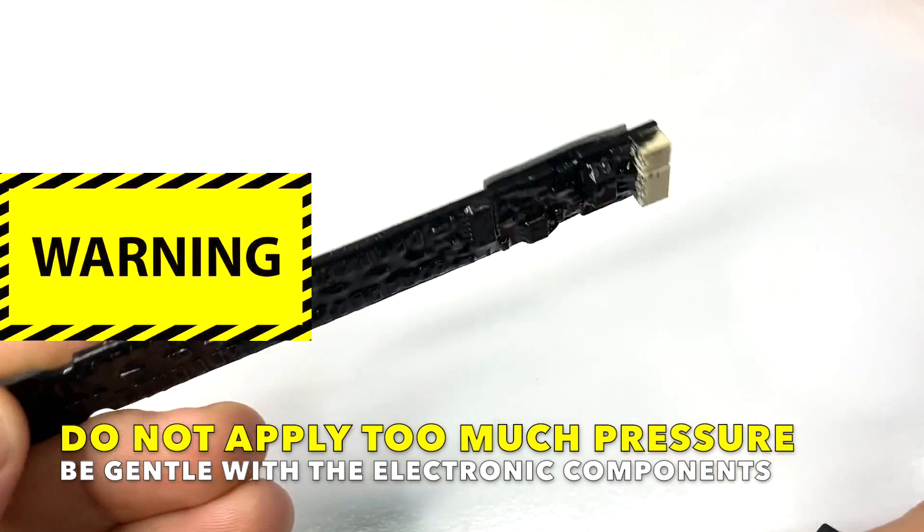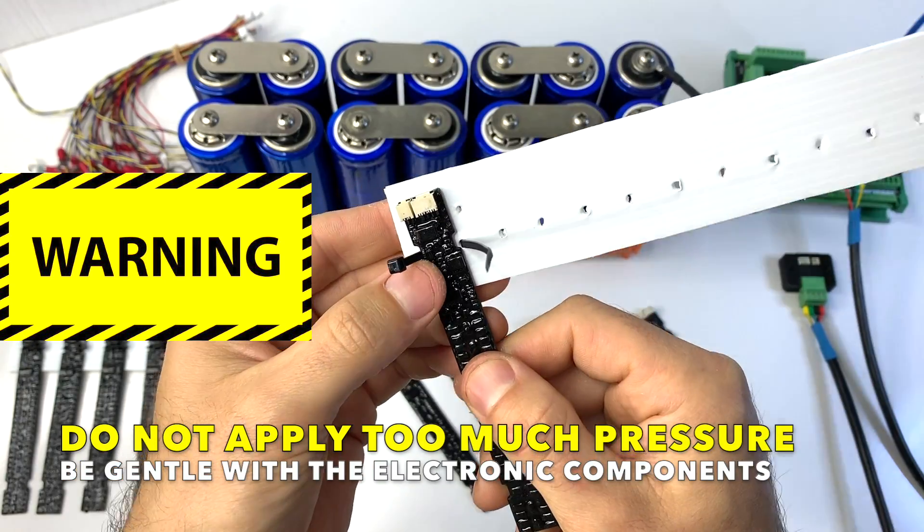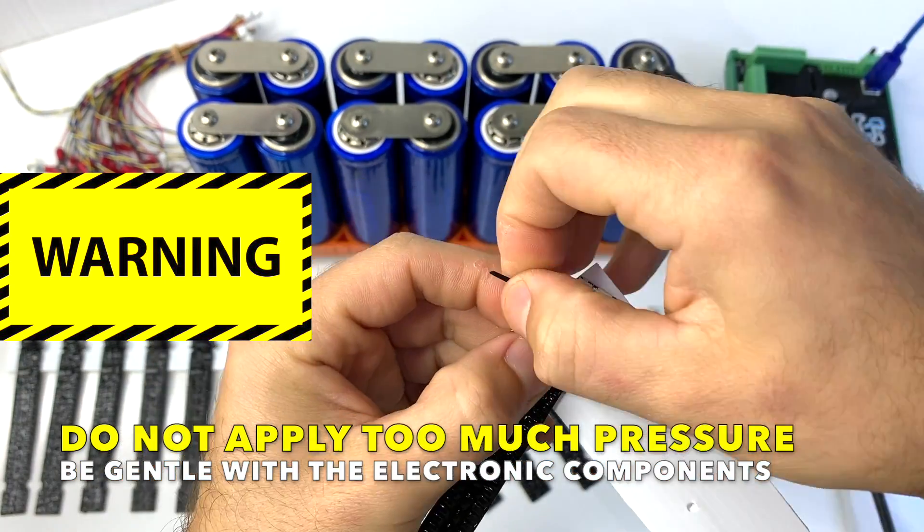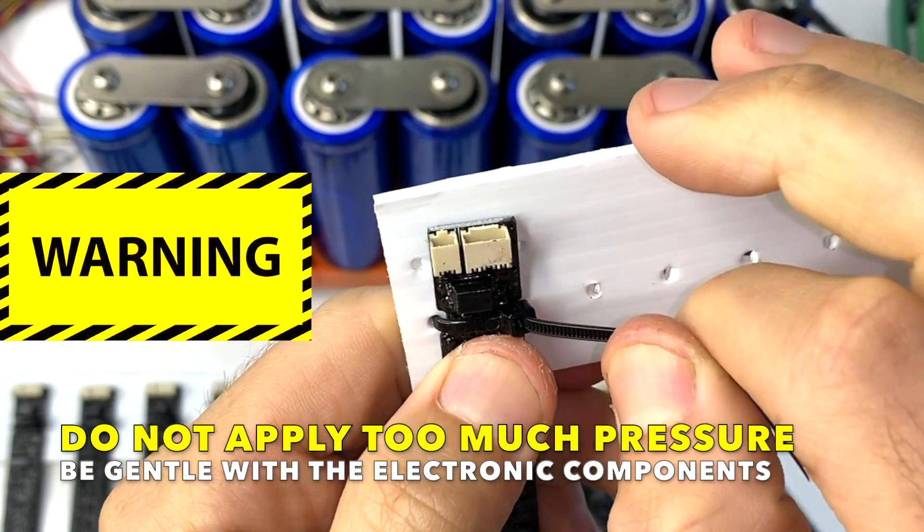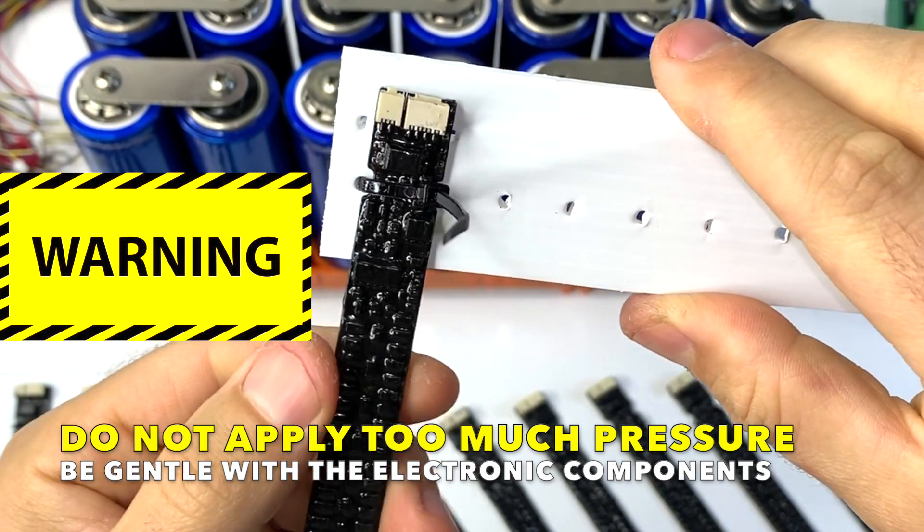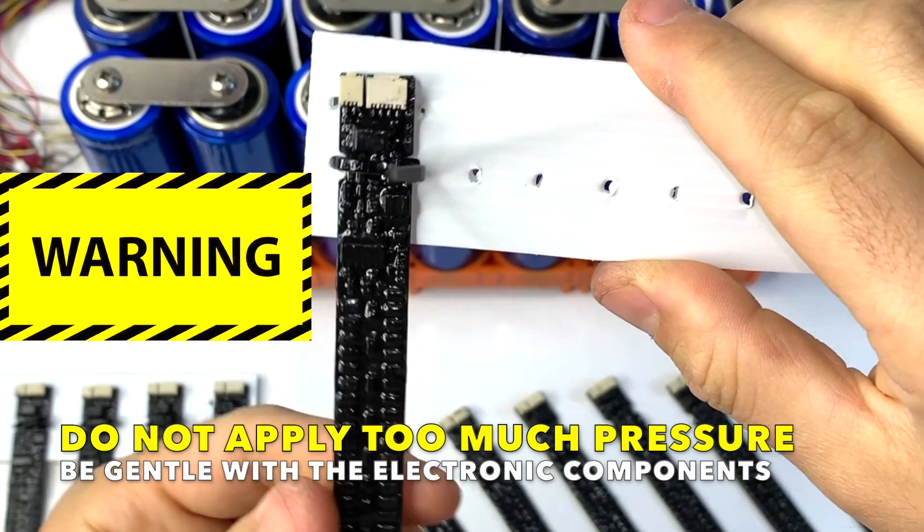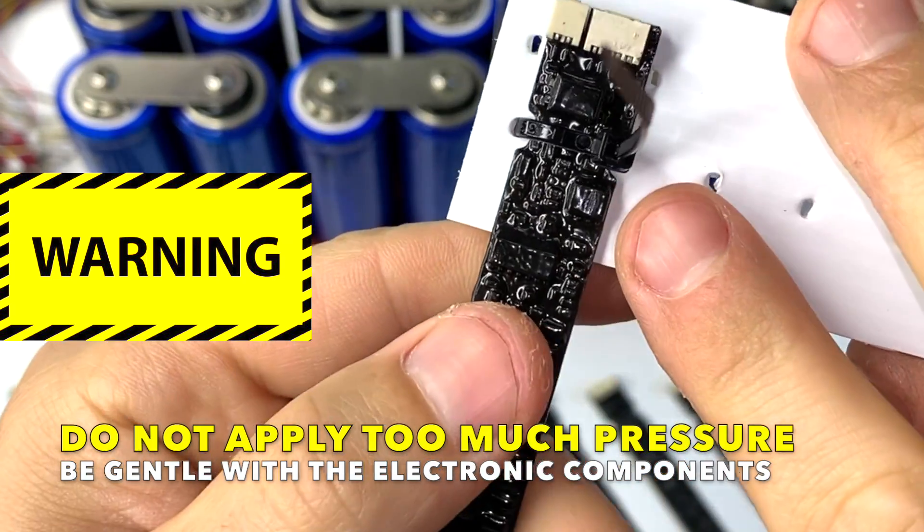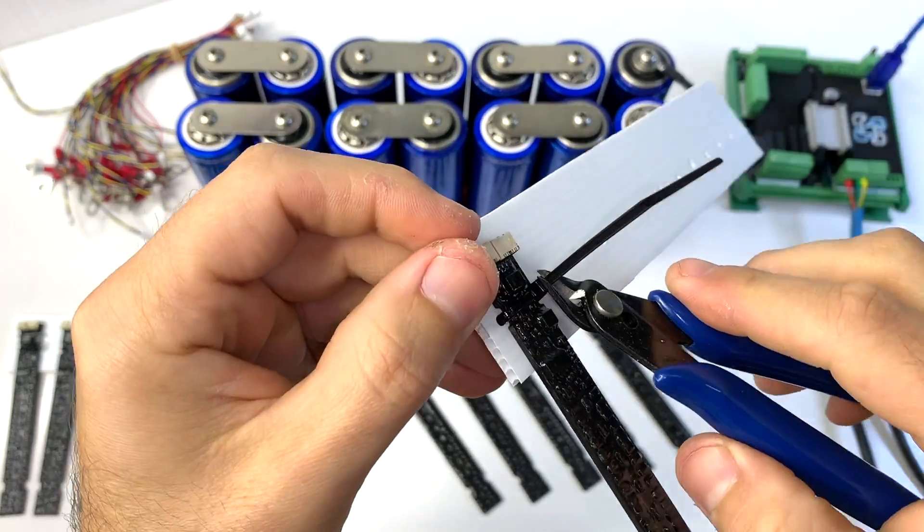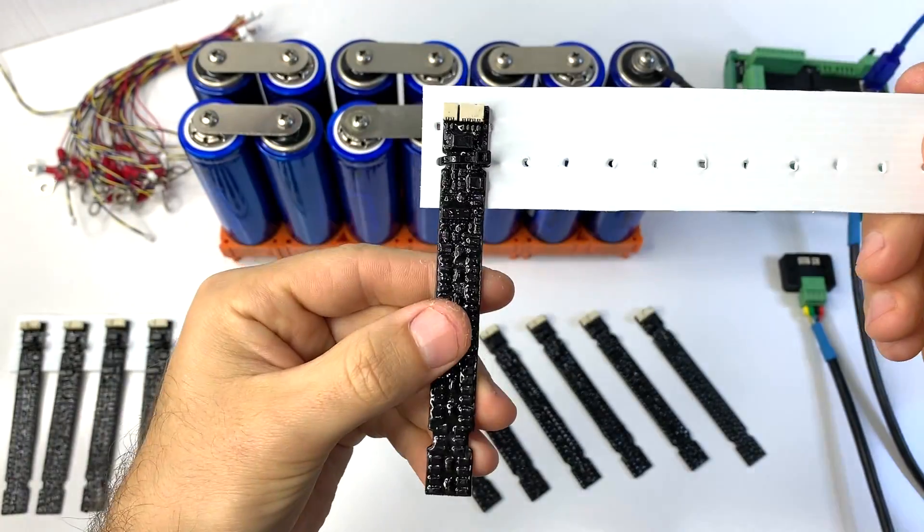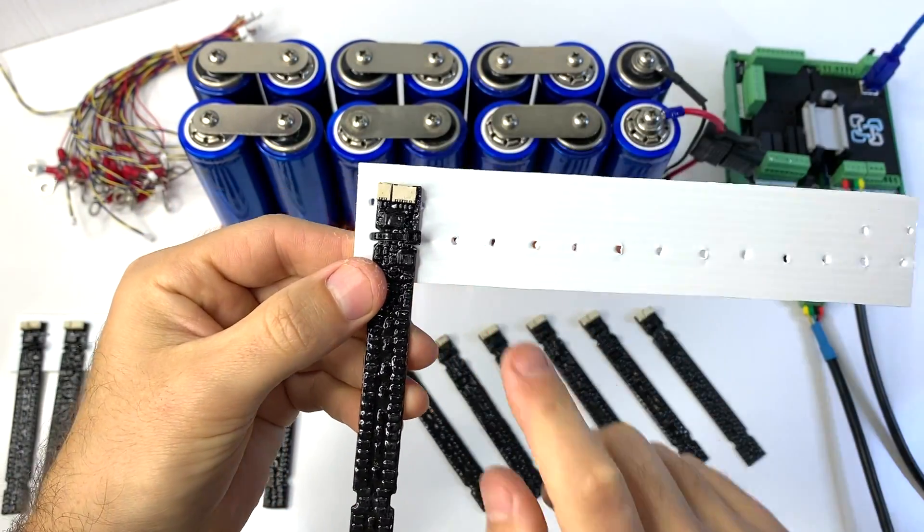You can use either zip ties, double side tape. I'm going to be zip tying them together. Don't go too hard, just enough just to lock it in place. You see it is a bit loose. You don't want to be crushing any components under the epoxy here. Cutting extra cable tie. And then I'm going to be doing the same for all the cell monitors here.